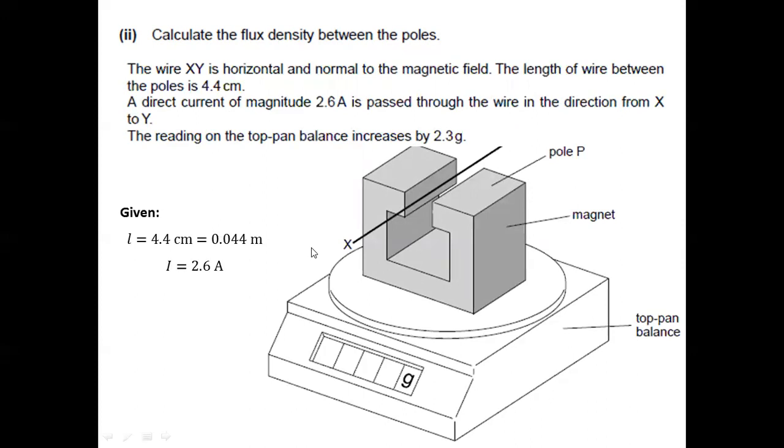Next, the current in the wire, which is 2.6 amperes. And the increase in mass, which is 2.3 grams or 0.0023 kilograms.